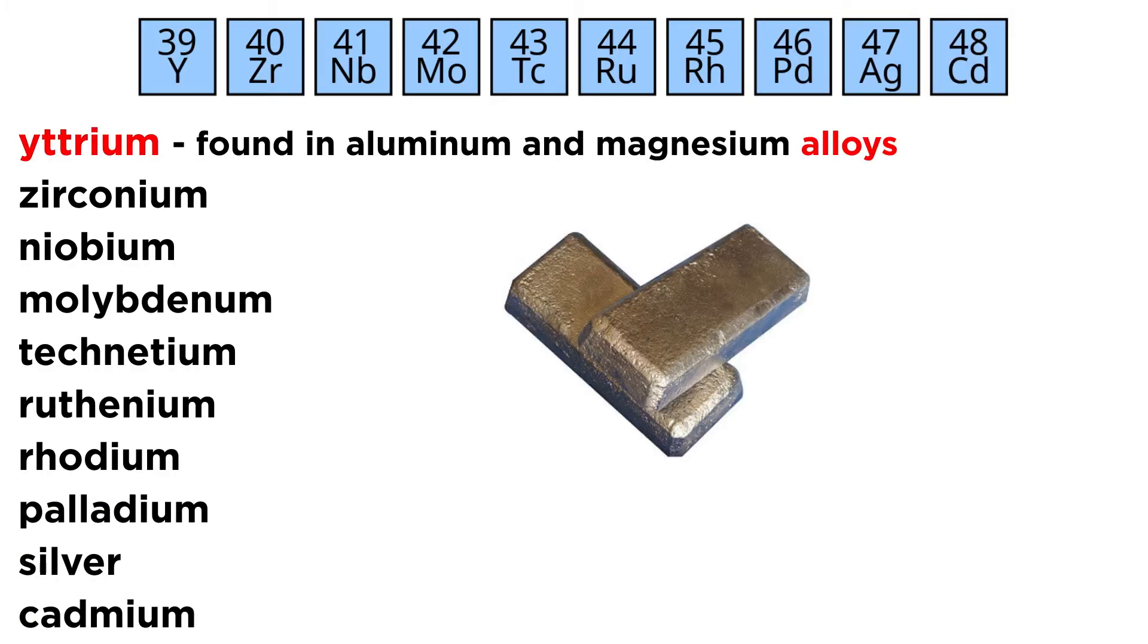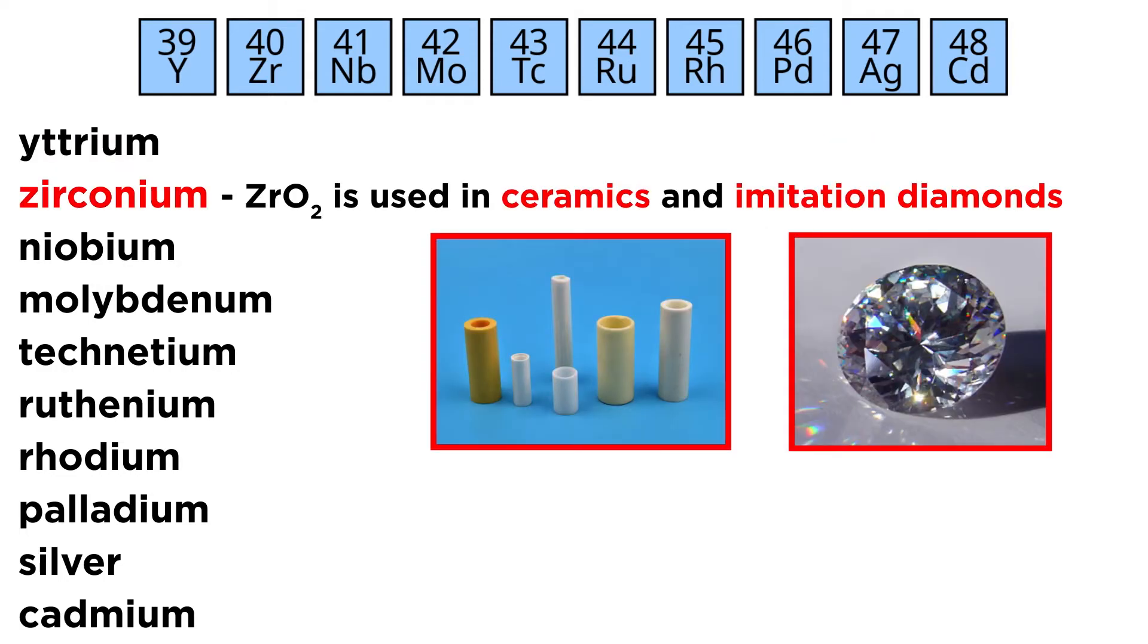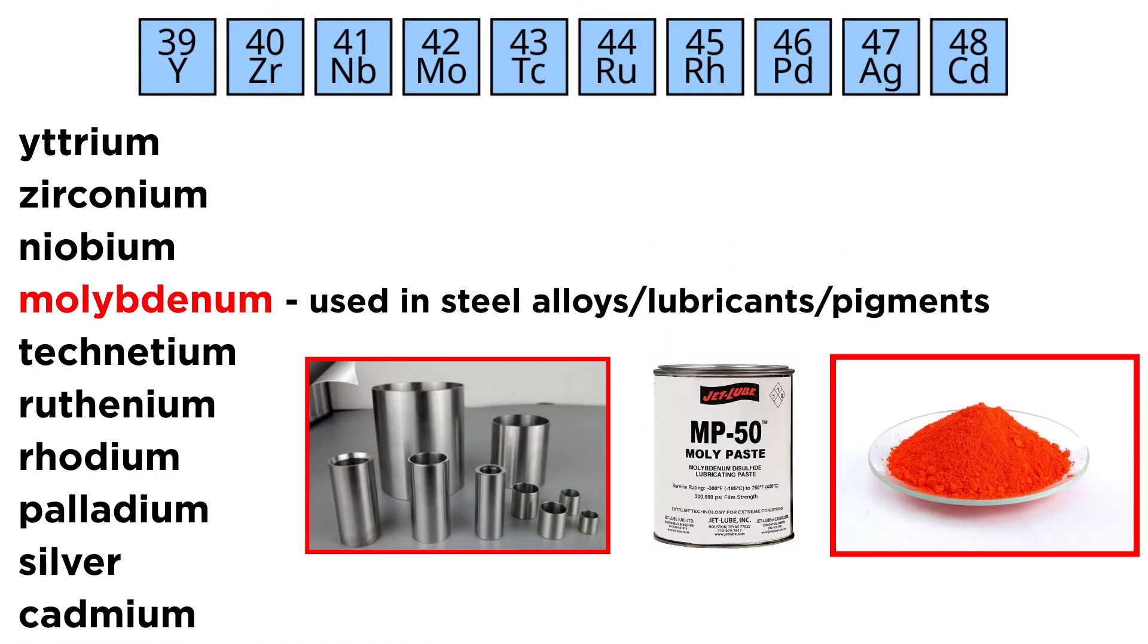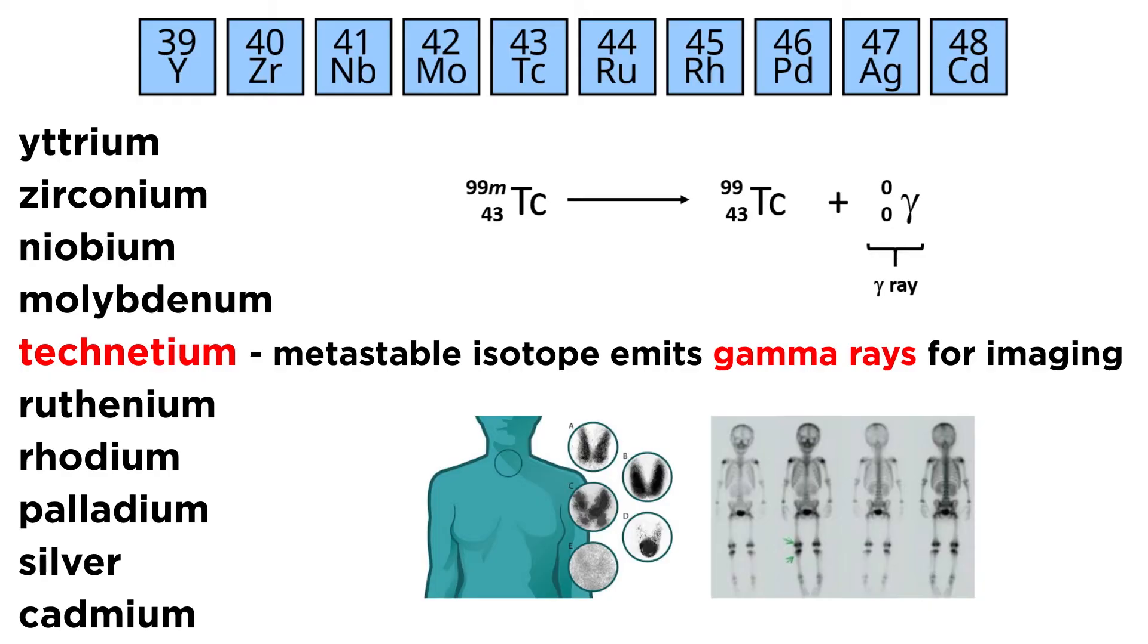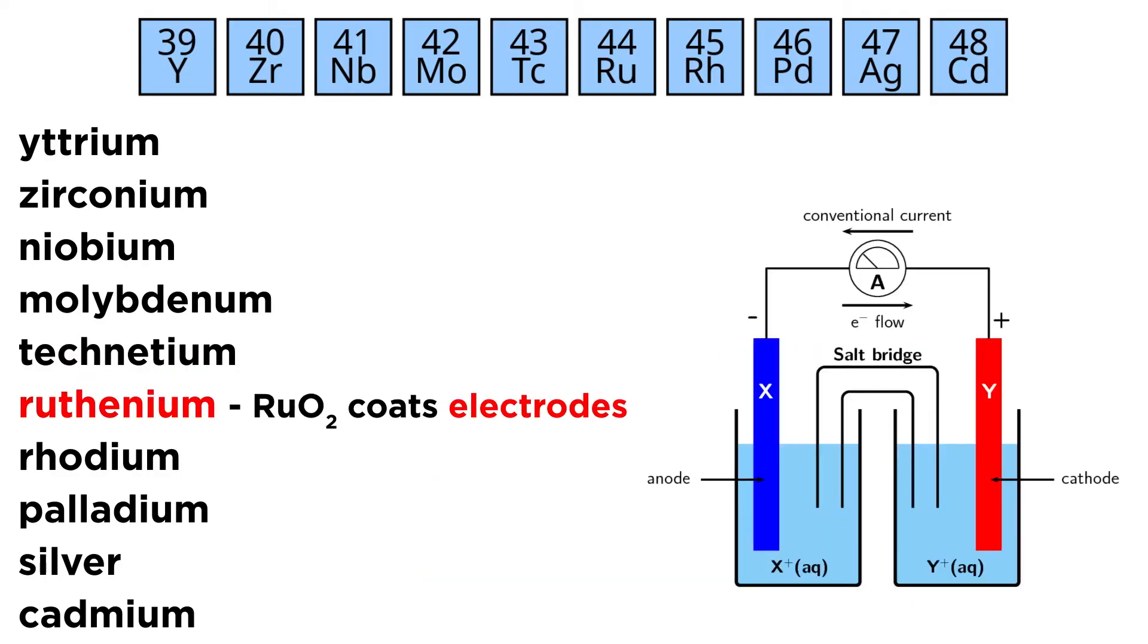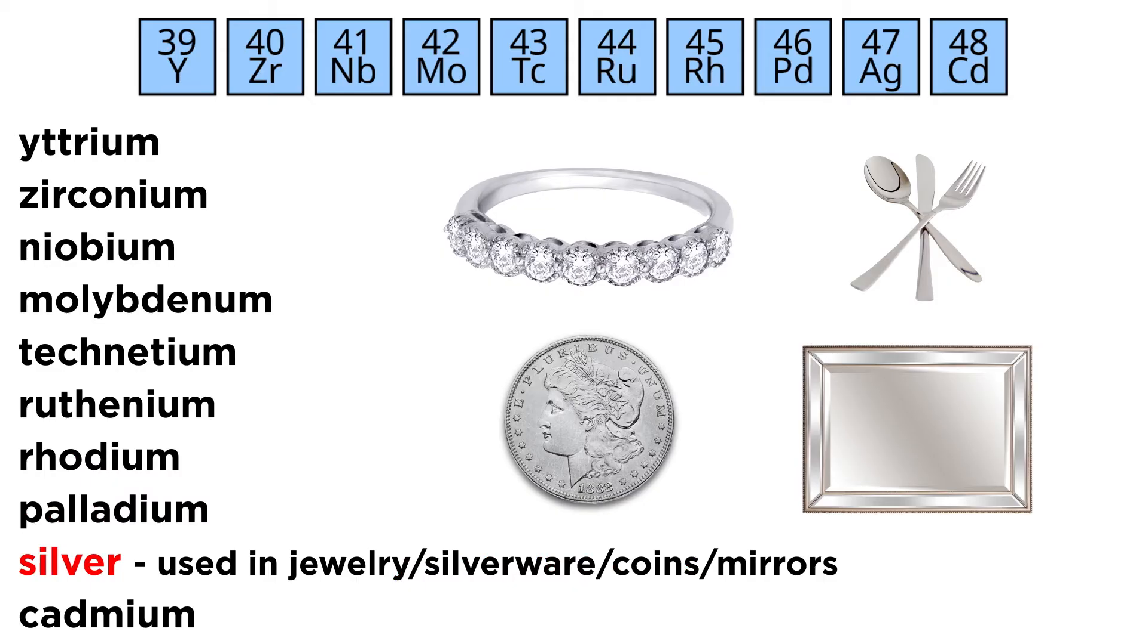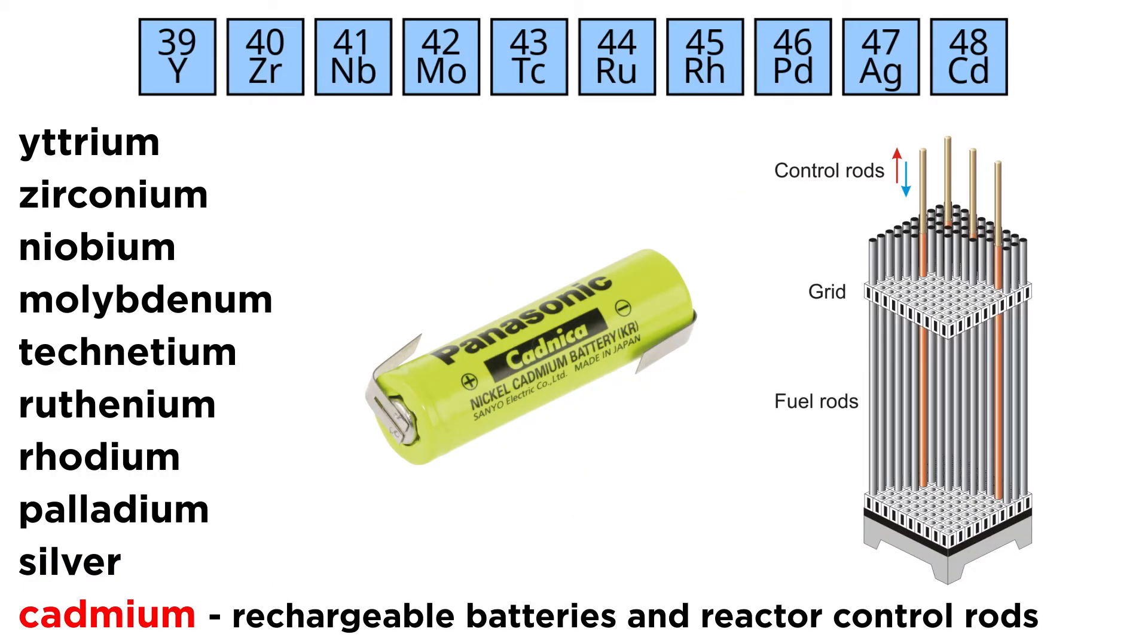Yttrium is found in aluminum and magnesium alloys. Zirconium oxide is used to make highly durable ceramics, as well as imitation diamonds. Niobium is used in various alloys and superconducting materials. Molybdenum is used to make steel alloys as well as lubricants and pigments. Technetium has an isotope that is metastable and emits gamma rays that give it utility in medical imaging. Ruthenium oxide is used to coat electrodes. Rhodium is used in catalytic converters for cars, as is palladium. Silver is used to make jewelry and silverware, coins as well as mirrors, being that it is the best reflector of visible light we know of. And cadmium is widely used in rechargeable batteries, as well as control rods for nuclear reactors.